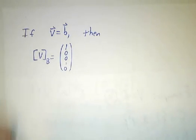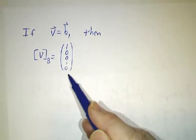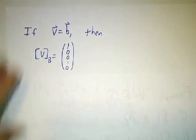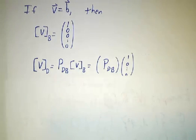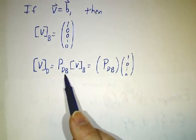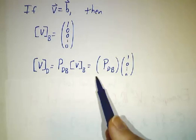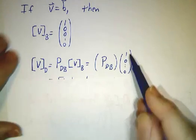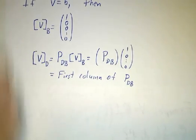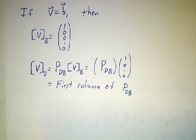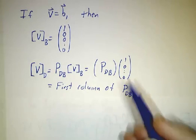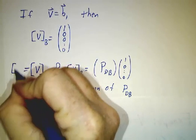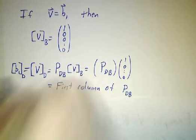So if we have a vector that's a very first basis element, then its coordinates in the B basis are just 1, 0, 0, 0, 0, 0. Because it's 1 times b1, plus 0 times b2, plus 0 times b3, plus 0 times bn. And its coordinates in the D basis have to be P_DB times [V]_B, so that's P_DB times 1, 0, 0, 0, 0, 1, but that's precisely the first column of P_DB. So we've just figured out what the first column of P_DB is. The first column of P_DB is the coordinates of b1 in the D basis.